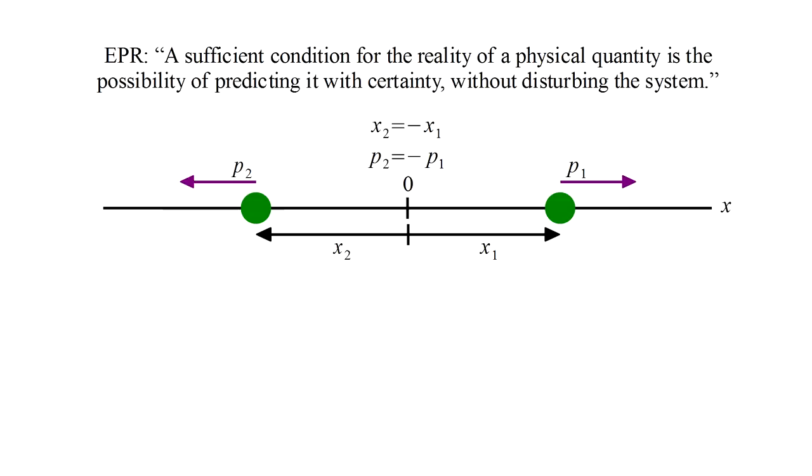Because the particles are identical, opposite momentum means opposite velocity. So position x2 would at all times be the negative of position x1.